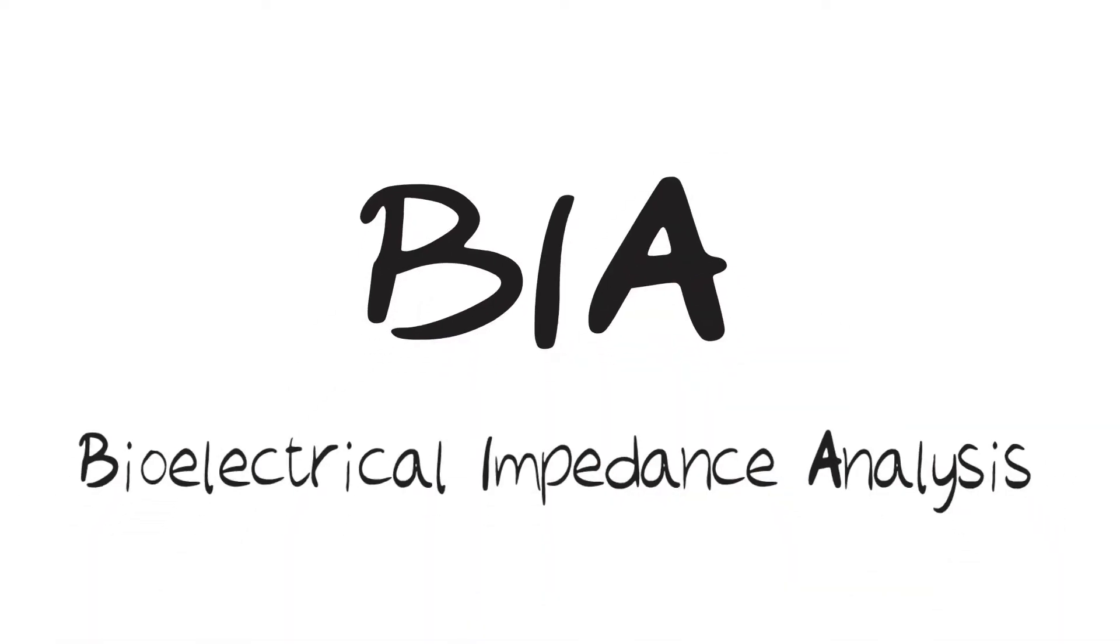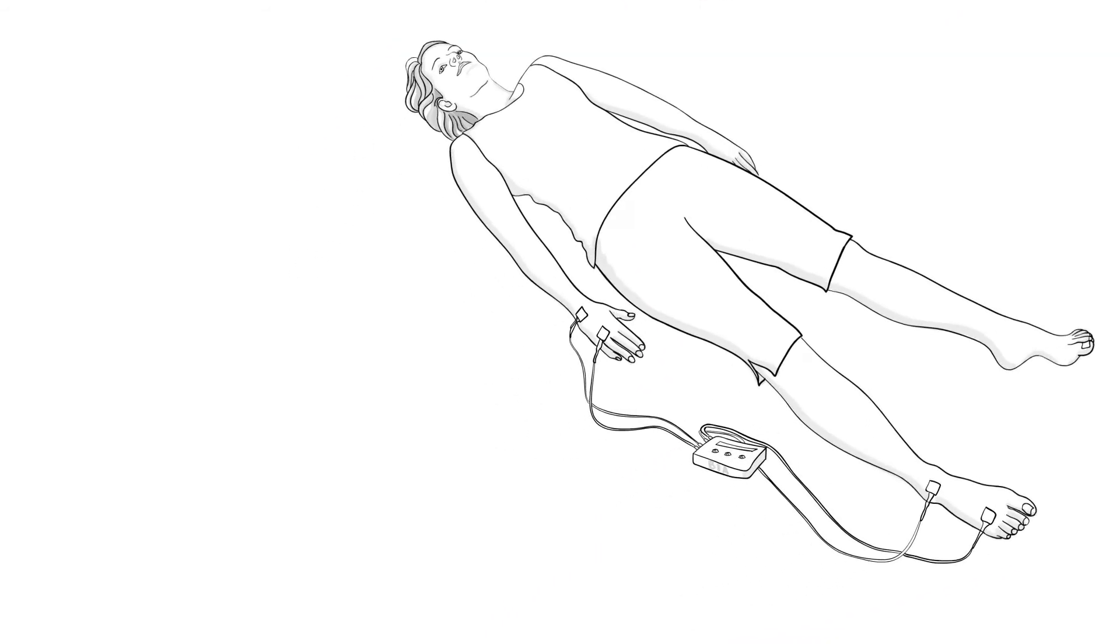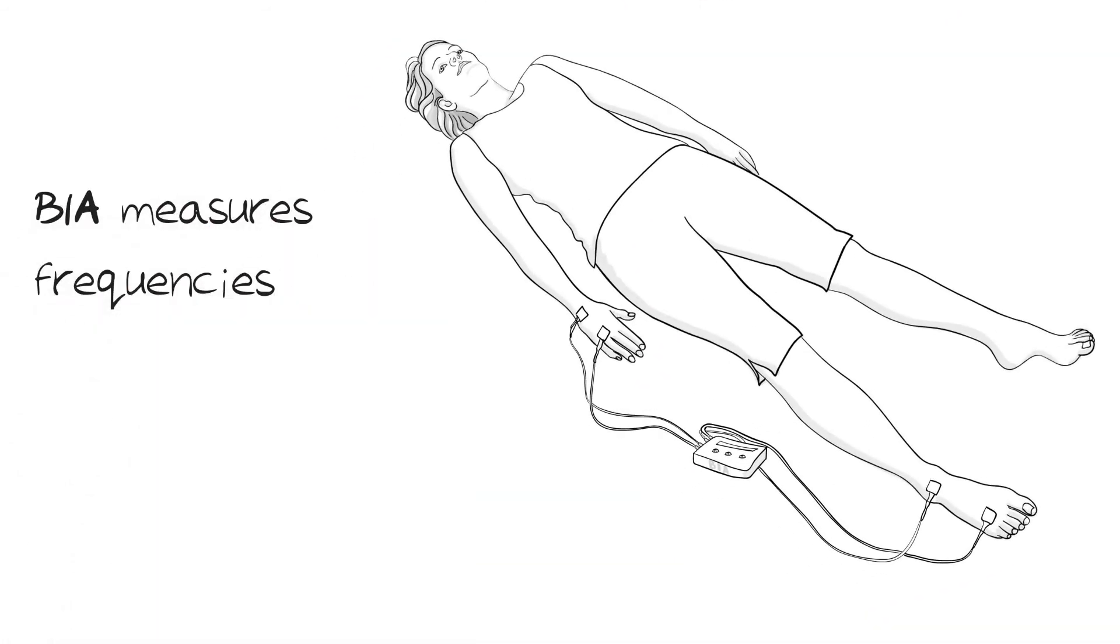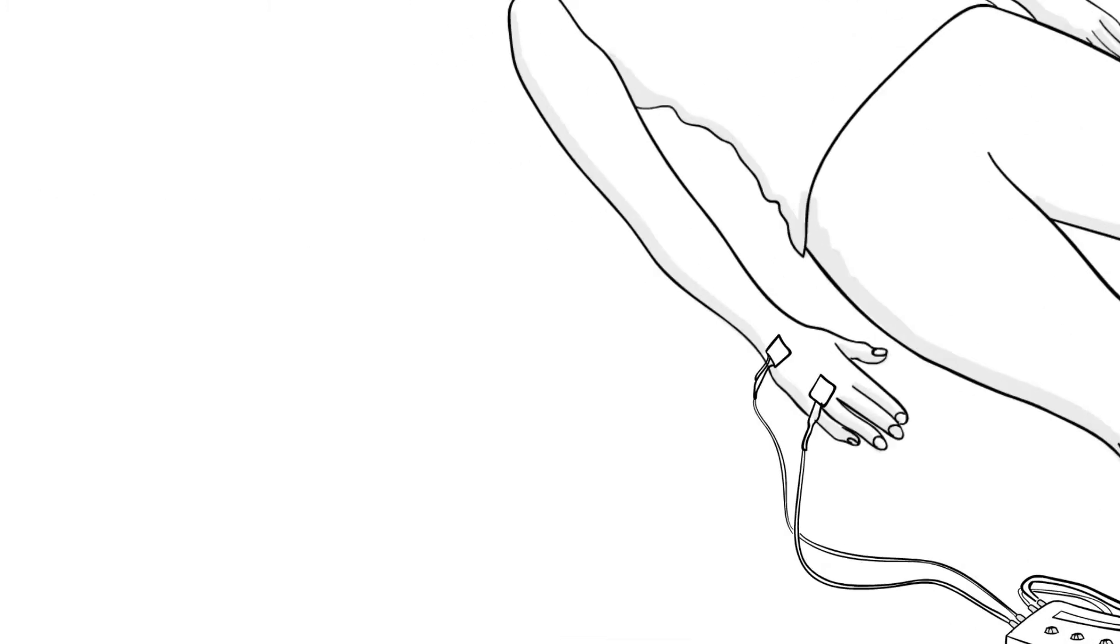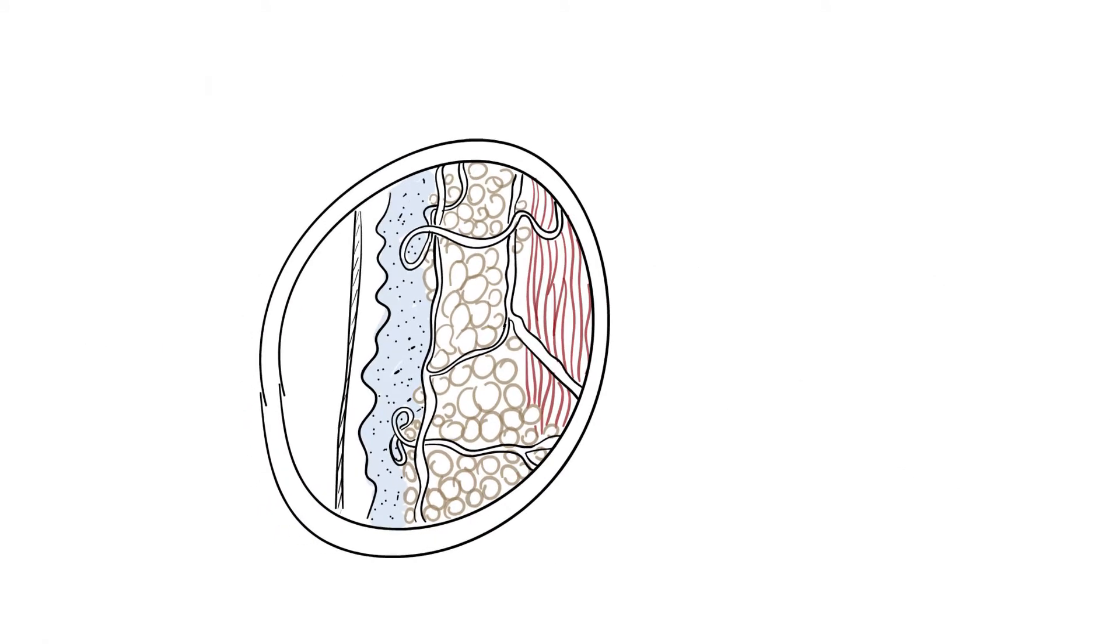BIA or Bioelectrical Impedance Analysis involves electrodes attached to the hands and feet, and a BIA device measures at a range of frequencies to receive impedance values which can be used to calculate the amount of body fat, lean muscle mass, and water in the body.